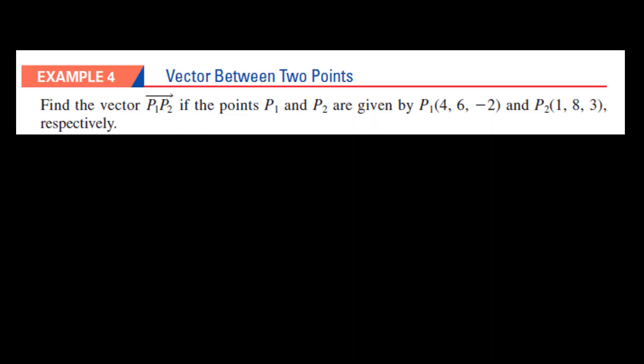Let's do an example from the book. We're given two points P1 and P2: P1 = (4, 6, -2) and P2 = (1, 8, 3). We have to find the vector going from P1 to P2. To find the vector from P1 to P2, remember this is very important: you have to do P2 minus P1.